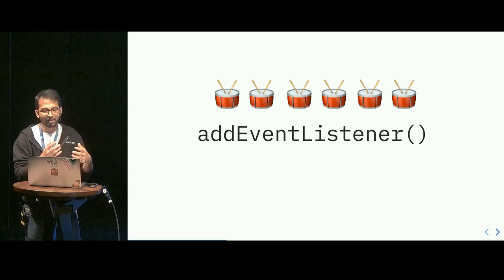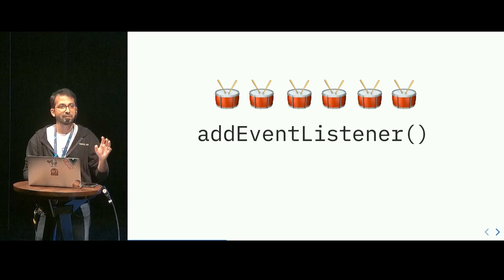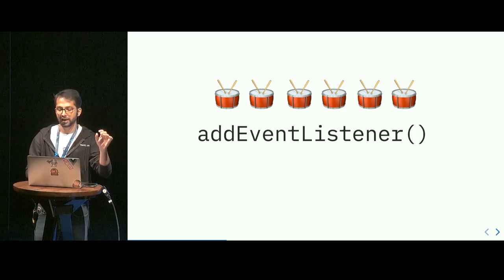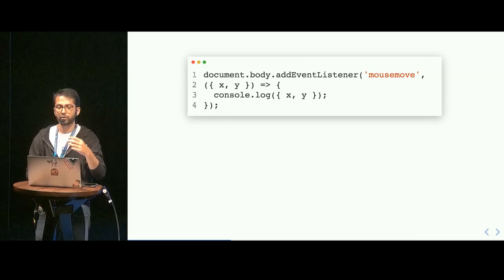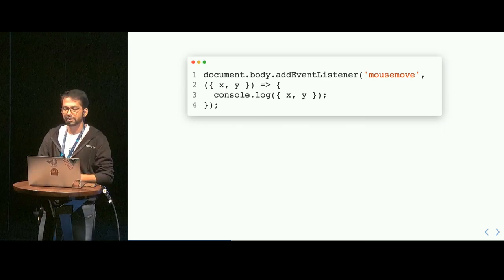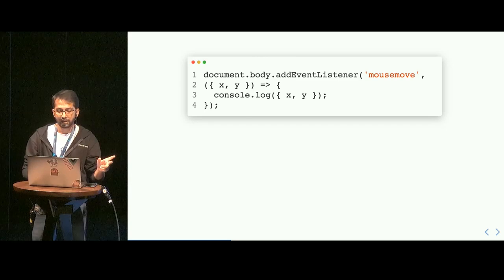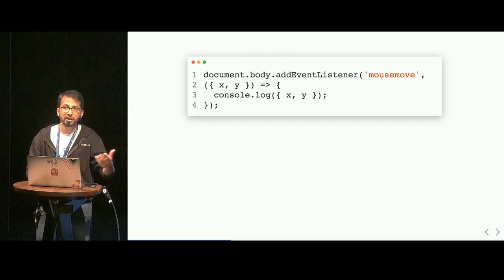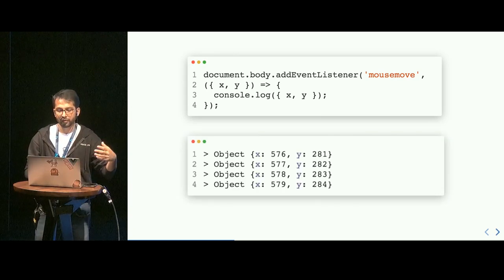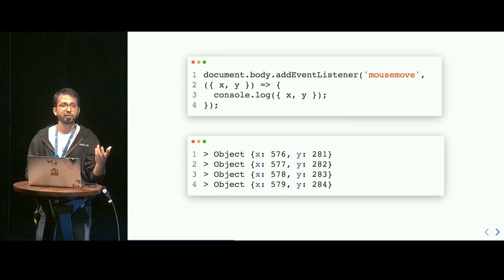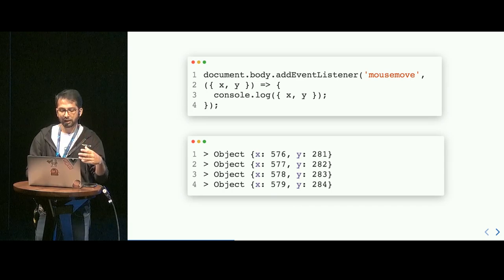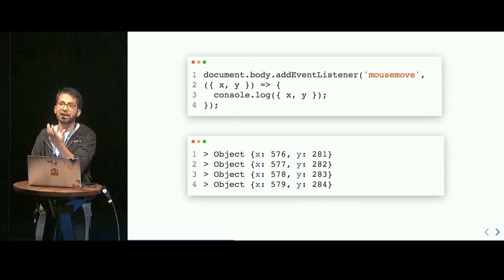Browsers have had an event system in place since the very beginning. If you've forgotten how addEventListener works from writing framework code all day, let me give you a refresher. We tell the browser: hey, we want to listen to the mouse being moved over the body element, and whenever that happens, please execute this function that prints the x and y values. Then we move our mouse and the browser does what it promised.